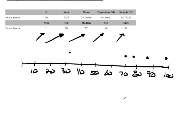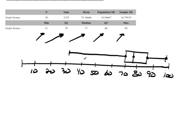Now I'm going to draw a line at Q1 and Q3 and make a box out of it, then make another vertical line at the median. Then I reach out all the way to the minimum and all the way up to the maximum. This is your basic box and whisker plot. We can see right away that this is the minimum, this is Q1, this is the median, this is Q3, and this is the maximum.